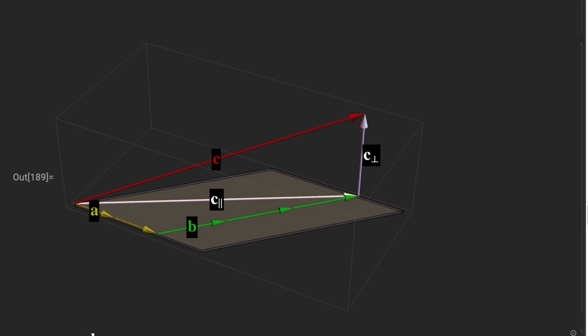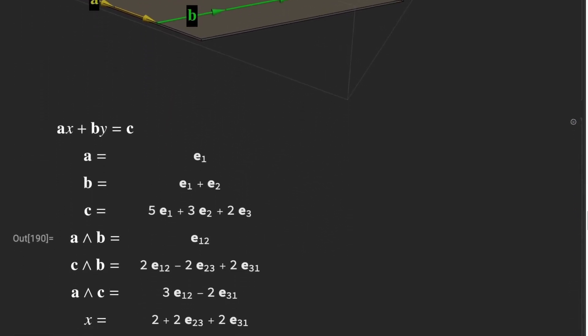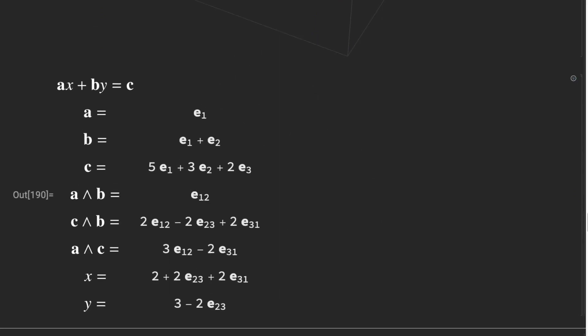Now in this case, we have c has a component that lies outside of the xy plane, and has a component, c parallel, that lies in the xy plane. This component is c perpendicular, or c perp. If we were trying to solve the system, the best we can do is to find the c parallel that is a superposition of a and b. And it should be, c parallel should be 2a plus 3b. And there will be a component that we cannot solve for.